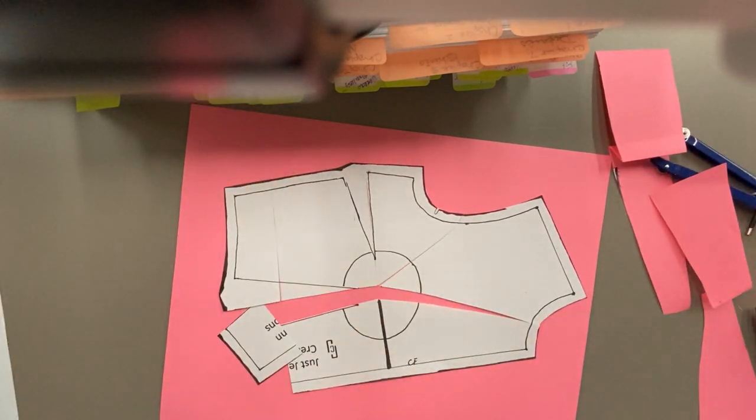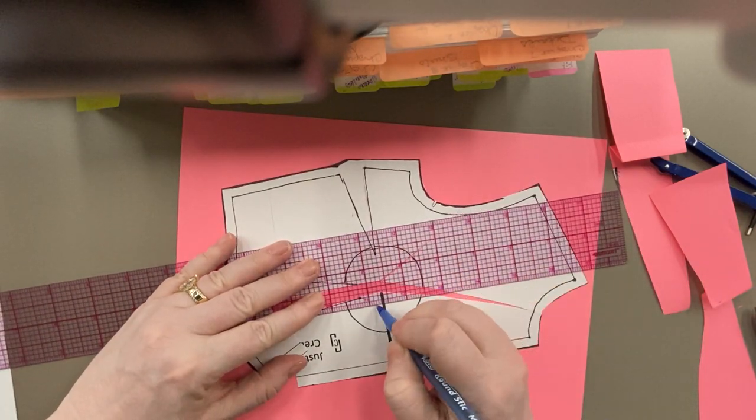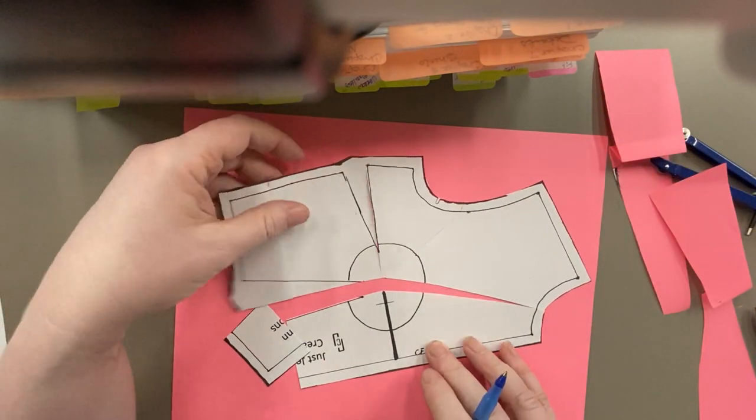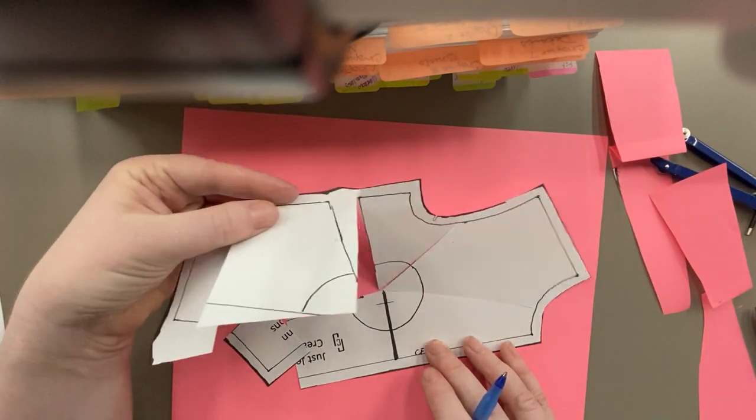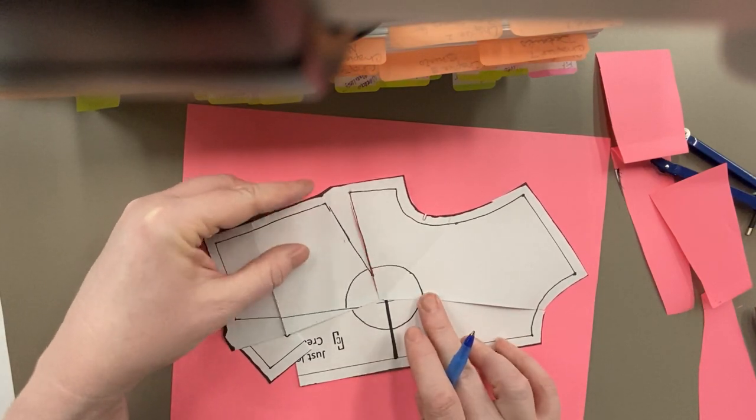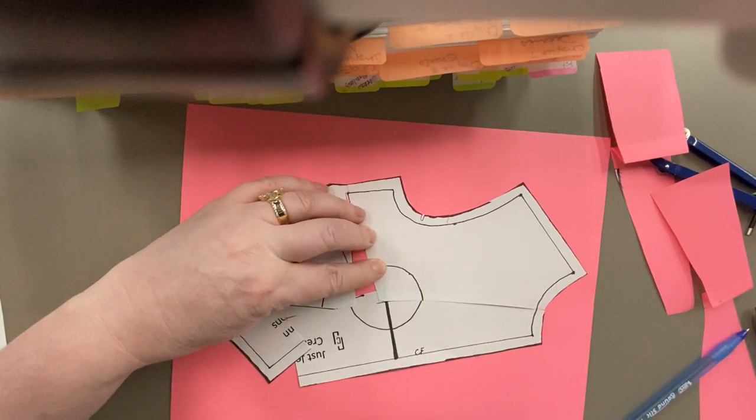I'm going to take my ruler. I'm going to measure over on my bust point the quarter of an inch because that is what we're making it smaller. And I'm going to shift all these pivots into that quarter of an inch. The top two pivots right there on the quarter of an inch. I'm going to secure my paper.